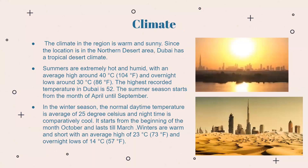Dubai's climate is warm and sunny. Located in the northern desert area, Dubai has a tropical desert climate. Summers are extremely hot and humid, with an average of around 40 degrees Celsius (104°F) and overnight lows around 30 degrees Celsius (86°F). The highest recorded temperature in Dubai is 52 degrees Celsius. The summer season runs from April until September, though March and October also remain extremely hot.